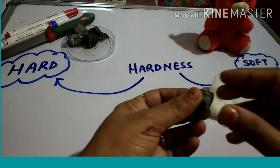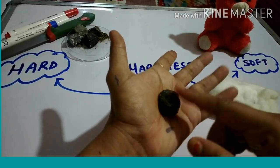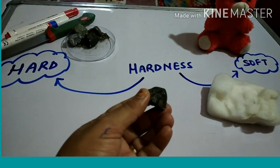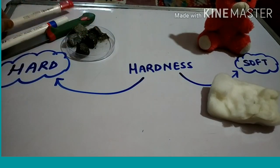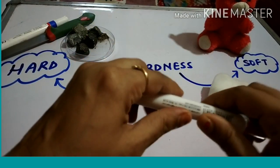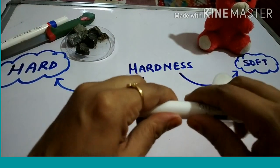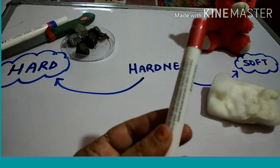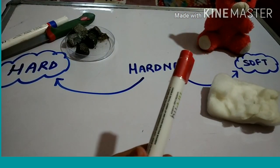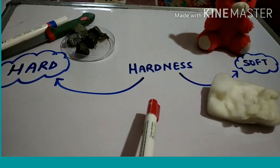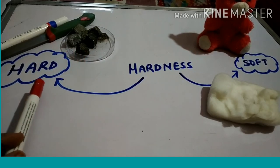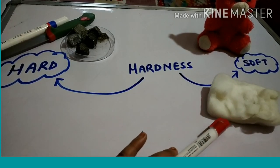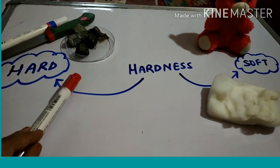Now let's take the example of a pebble. Take the pebble and try to press it — you can't press it. When you can't press anything, that means it is hard. I have also taken my marker and I am trying to press it, but I am unable to compress it. So this is the best example of hardness. Hardness is categorized in two parts: if we can compress something, it is soft; if we can't compress it, it is hard.